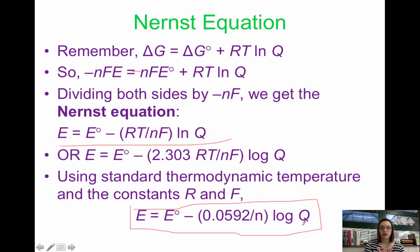It's E equals E naught minus 0.0592 over n times log of Q. You don't have to worry about the entire derivation. Really, I want you to focus on this equation. This is the Nernst equation. This is how we can determine cell potential at non-standard conditions. We're going to use the delta G connection to examine effect of concentration on cell potential.